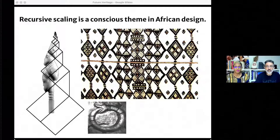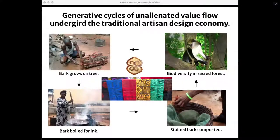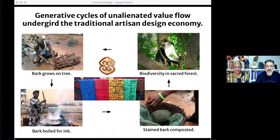Recursive scaling is a conscious design theme in most African cultures. We have trouble recognizing these evolutionary trajectories because we've been blind to knowledge based on generative systems. And it's not just symbolic — the reason for visualizing recursion is that these circular flows are fundamental to indigenous economies. For example, my friend Gabriel Boache gets bark from the body tree to make ink for adinkra stamps. Once that pigment is removed from the bark, the remainder is composted. In some cases, that compost is put into a sacred forest — monkeys and birds eat those plants and spread those seeds, which include the body trees. So the whole thing is just a beautiful circular economy.